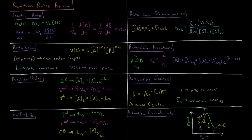Once we determine the reaction order, we have various expressions for the integrated rate law, or the time-dependent concentration of a given chemical species. For first order, it's an exponential decay: [A](t) = [A]₀ × e^(−kt). For second order, the inverse of the concentration equals the inverse of the initial concentration plus kt — an inverse relationship over time. For zeroth order, the concentration equals the initial concentration minus the rate constant times time.